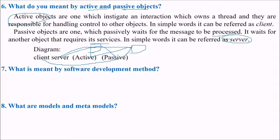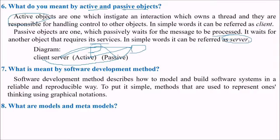What is meant by software development method? Software development method describes how to model and build software systems in a reliable and reproducible way. To put in simple methods that are used to represent one's thinking using the graphical notations.